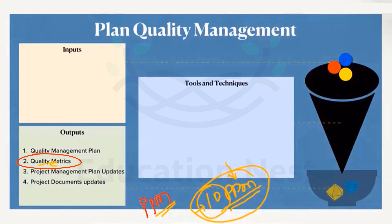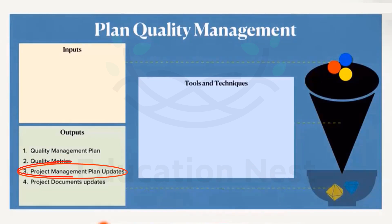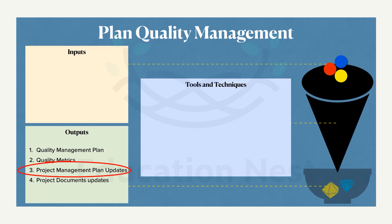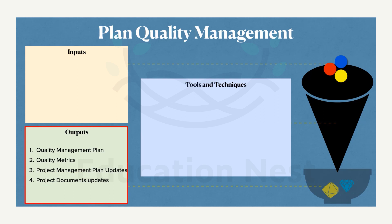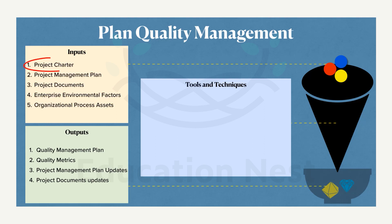The next output is project management plan updates. The risk management plan can be updated, and the scope baseline can be updated. Different project documents also get updated — lessons learned can be updated, the requirements traceability matrix can be updated, the risk register can be updated, and even the stakeholders register can be updated. All these are outputs after we finish the Plan Quality Management process.